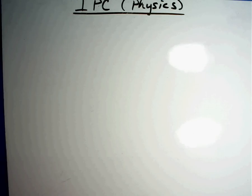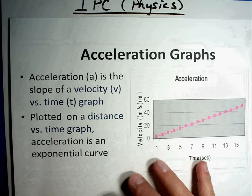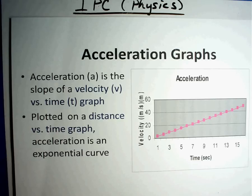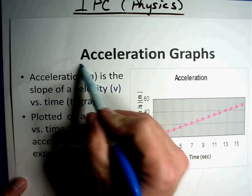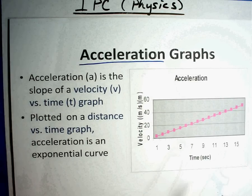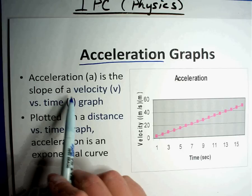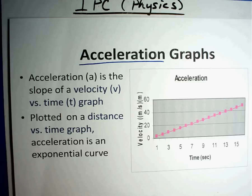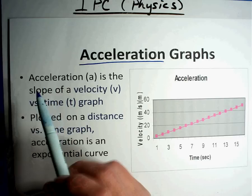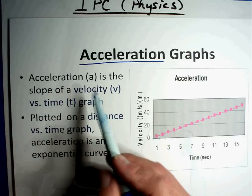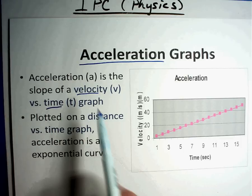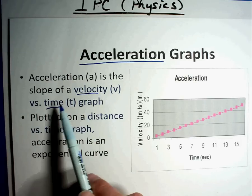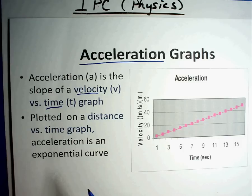Whenever we take velocity — like driving a car going 55 miles an hour and then the speed limit changes so we can go faster — that's called acceleration. It's taking velocity and speeding it up; we are accelerating the car. I'll give you a second to jot down these two bullets and we'll come right back.